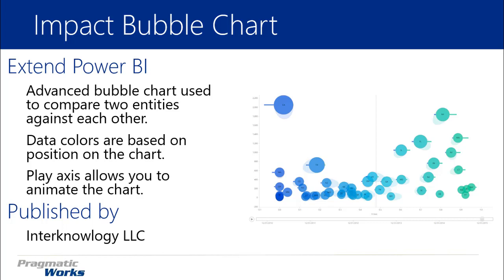Similar to the scatter chart available natively, you have a play axis. If you want to animate the values and see the data across time — or across a certain value, it doesn't have to be time — you can animate the values and have a category, a time, a year, or whatever you want, and hit a play button to animate the chart and see the bubble chart move across time.